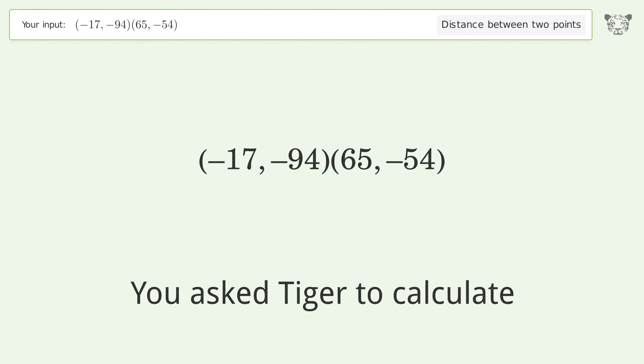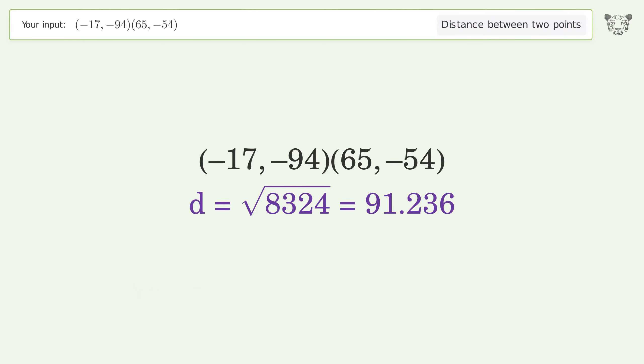You asked Tiger to calculate the distance between two points. The distance between the two points is the square root of 8324, or 91.236.